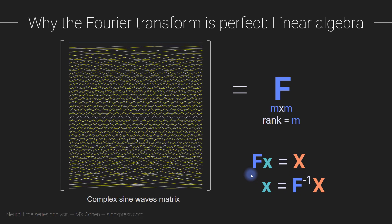In this video I gave two analogies for why the Fourier transform is a lossless procedure — from the perspective of statistics and from the perspective of linear algebra. I hope that at least one of these explanations was intuitive and understandable. In the next video, I'm going to continue discussing the implication of the perfection of the Fourier transform for computing the inverse and getting from the frequency domain back into the time domain through the inverse Fourier transform.